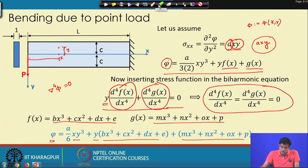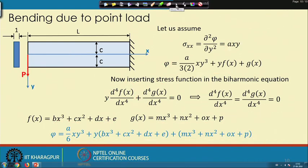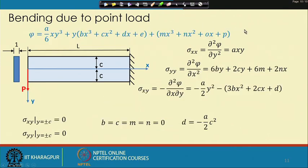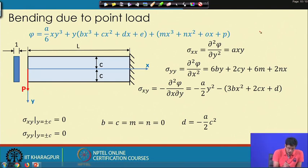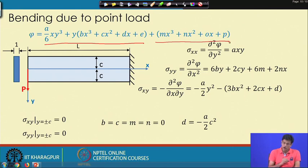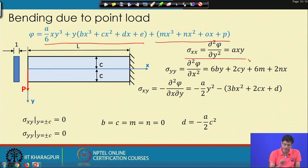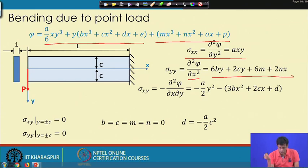Once φ is established, we find σyy = ∂²φ/∂x² and σxy from the appropriate derivatives. For example, σyy involves terms like 6by + 2cy + 6mx + 2nx.